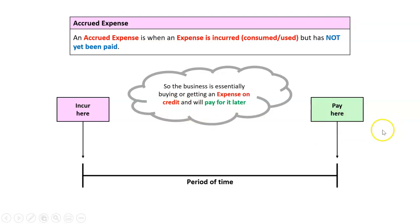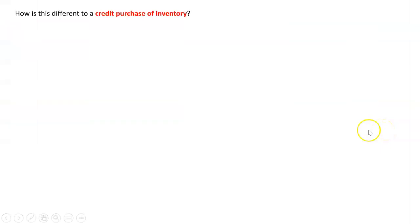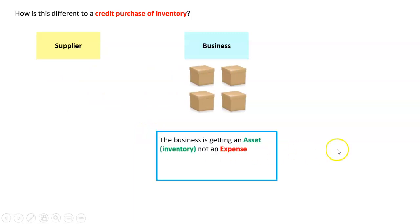But this whole buying on credit does sound familiar. We already deal with a transaction where we buy inventory on credit. When we do that, it goes to an account called accounts payable. So is that what we're going to do for an accrued expense? The answer is no, because it's a little bit different. This topic is called accrued expenses, but when we buy our inventory from a supplier on credit, that's not an expense. That is actually an asset, which we would call inventory.